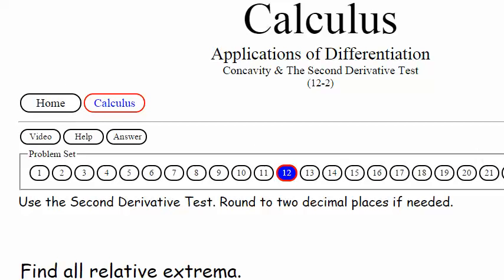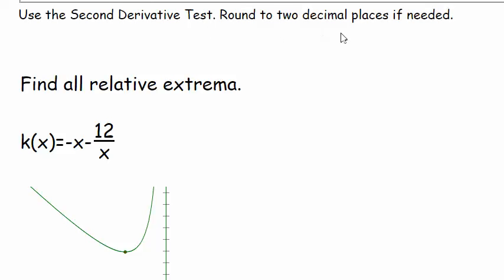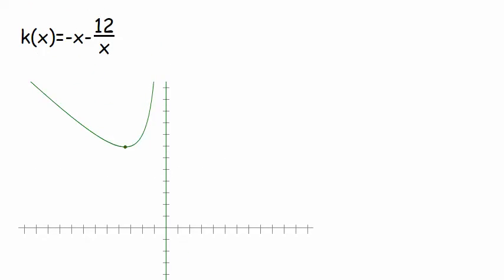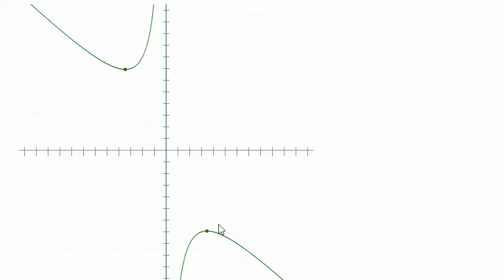12-2, there it is. It says use the second derivative test and round to two decimal places if needed. So it says find relative extrema. In other words, we're going to be finding the minimum, and that's right about this little area here. And then the maximum, as you can see here, this would be the maximum.